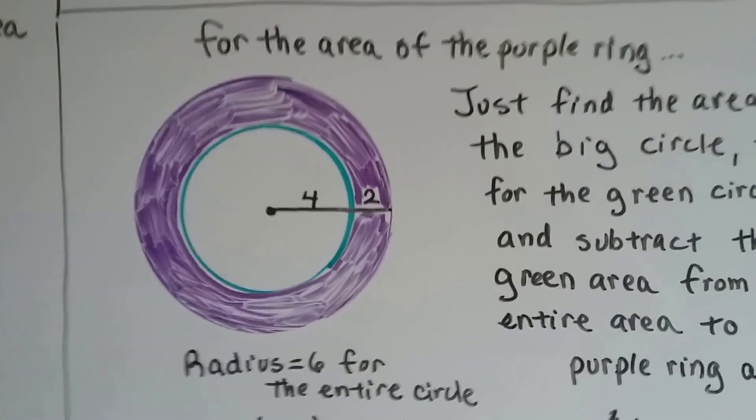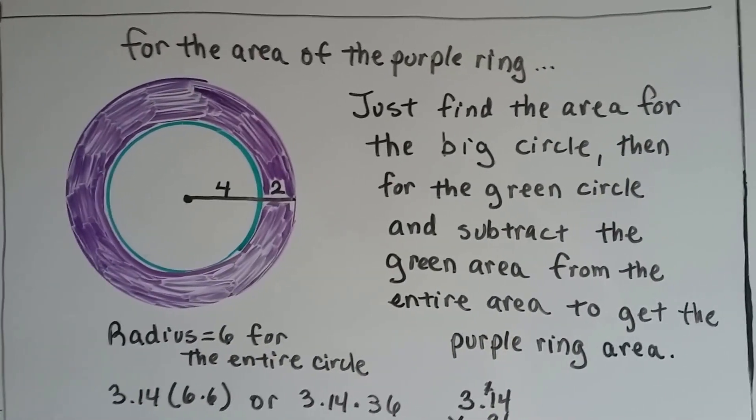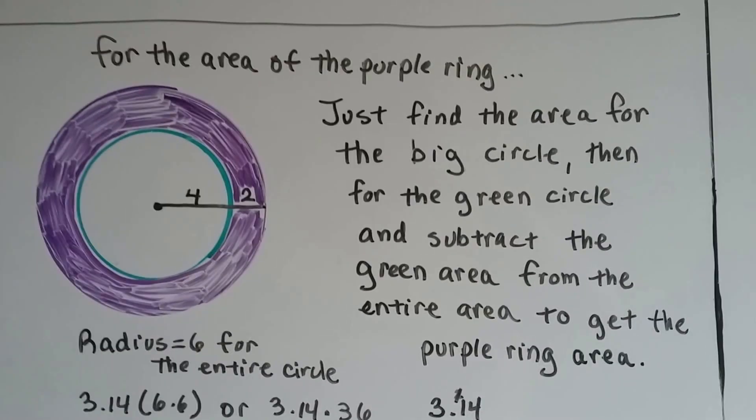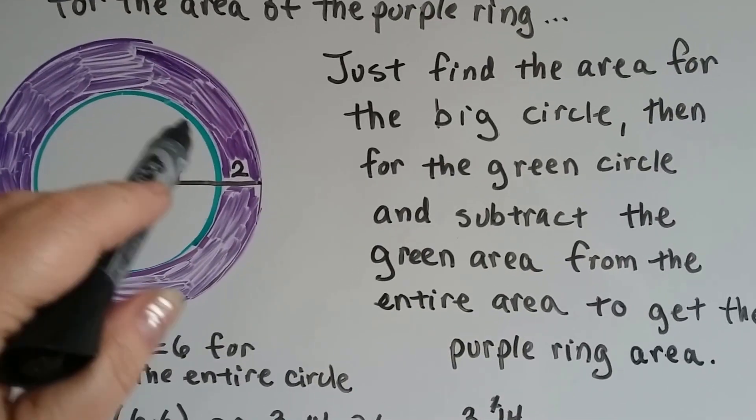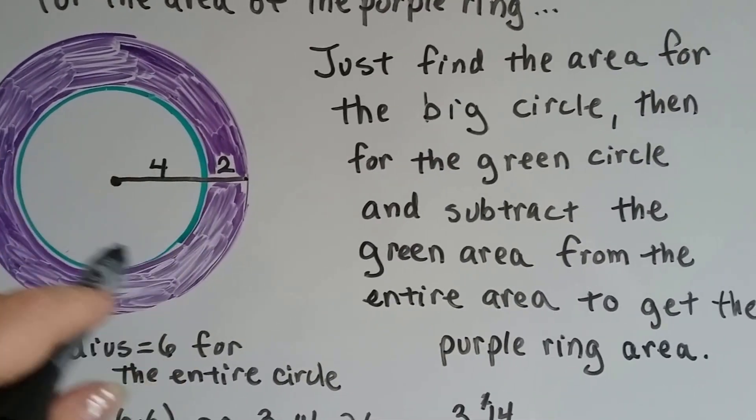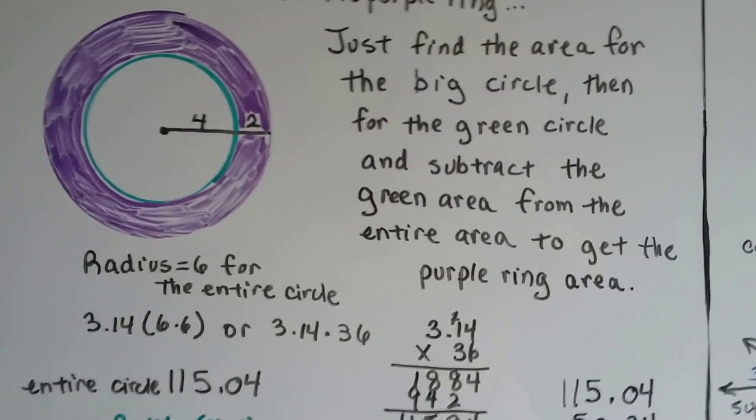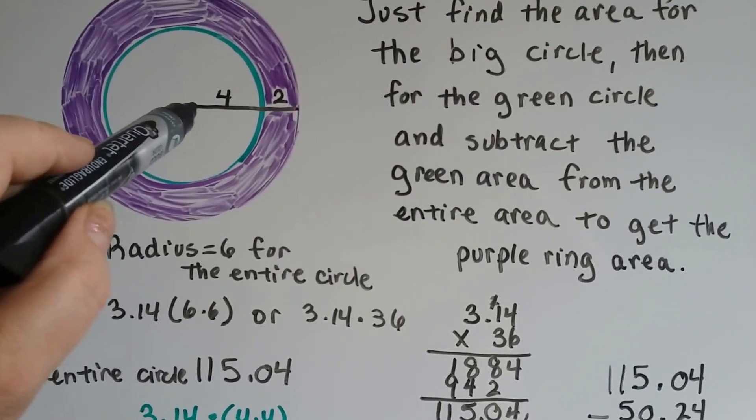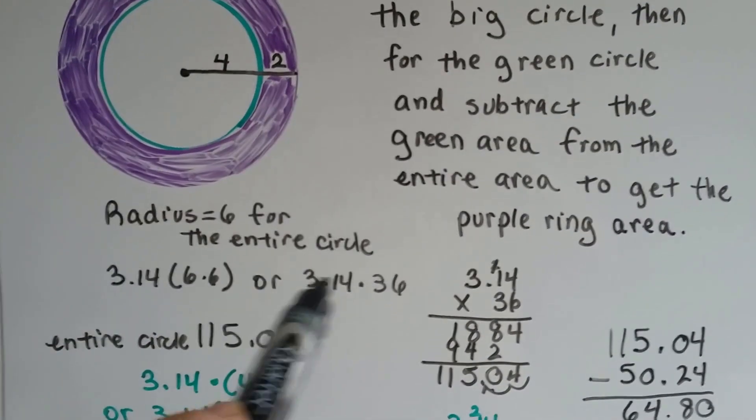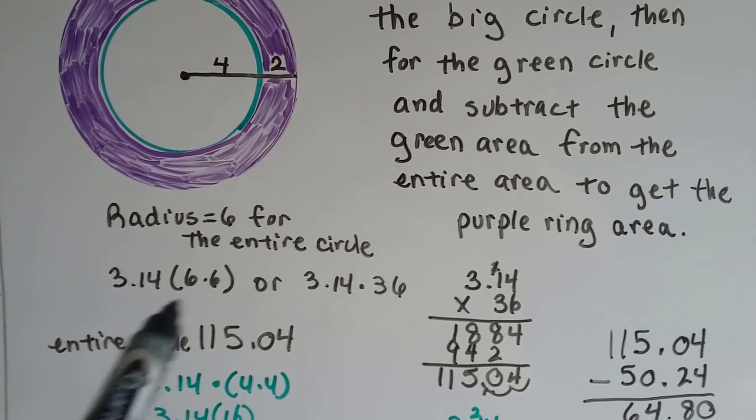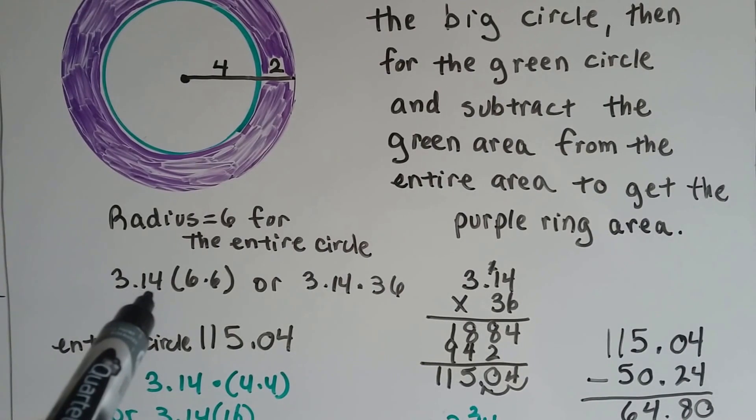Well, if we have this purple ring with a white circle inside of it, and they want us to find the area for just the purple ring, well, we find the area for the entire circle. Then we find the area for the green and white circle on the inside, and we subtract that from the big one. So, the radius is 6 inches because we've got 4 and 2. For the entire circle, it would be 6. So, for the entire circle, we find, after plugging in the information to the formula, pi r squared...